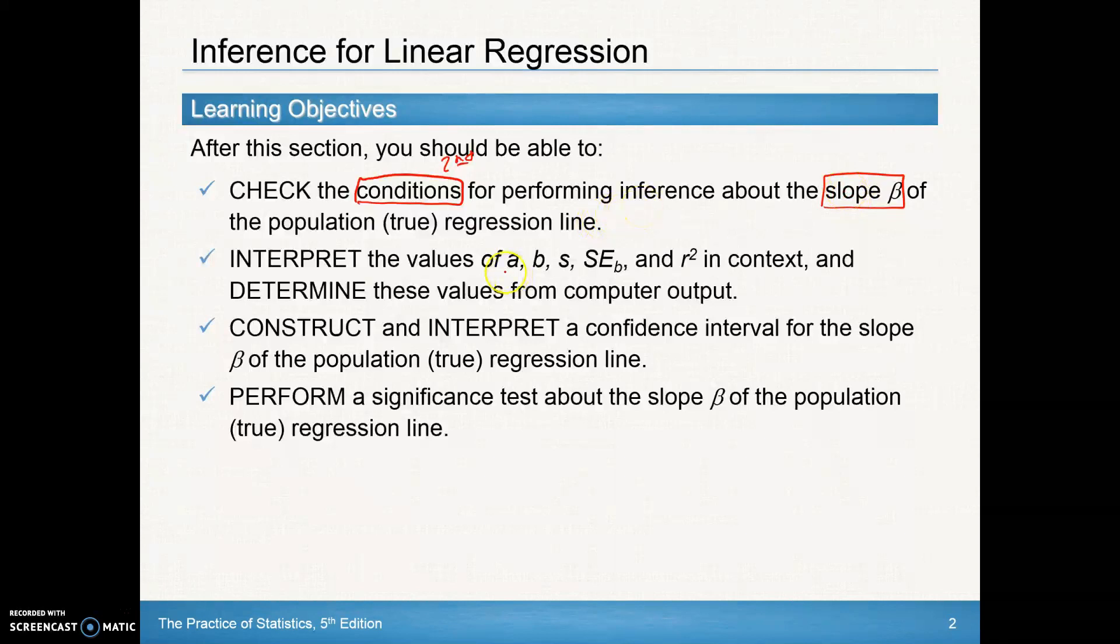We're going to interpret the values of a, which is our constant, b, which is our slope, s, which is our standard deviation of our residuals, the standard error of our slopes, and r squared, our coefficient of determination. We'll determine these values from our computer output. So we'll be looking at our TI-Inspire calculator outputs and we'll do that to help us construct and interpret confidence intervals for the slope and also do significant tests about the slope.